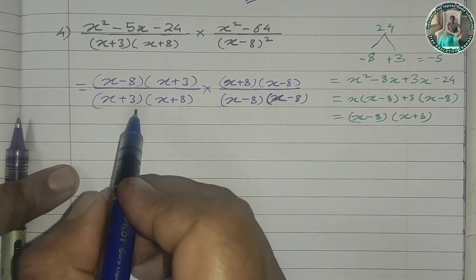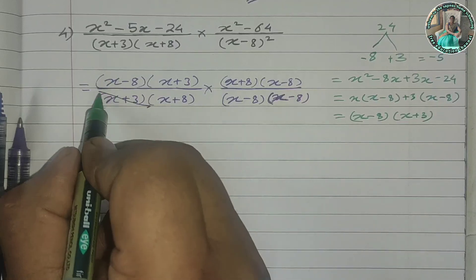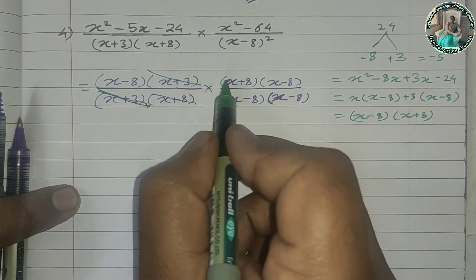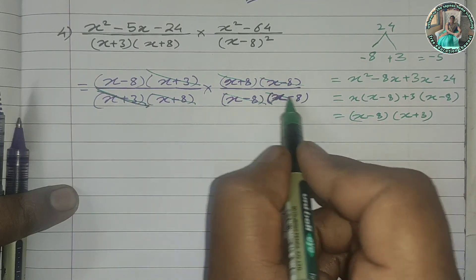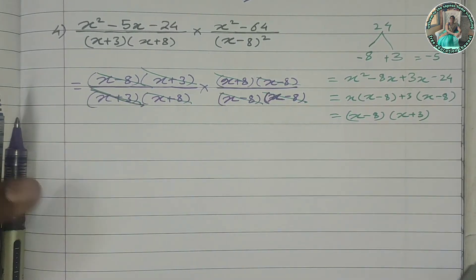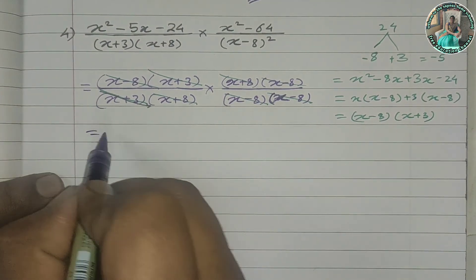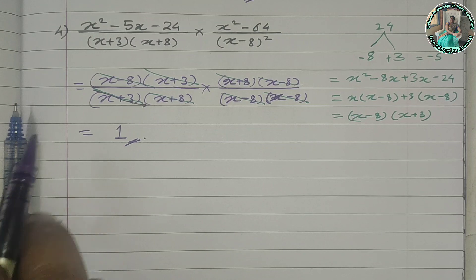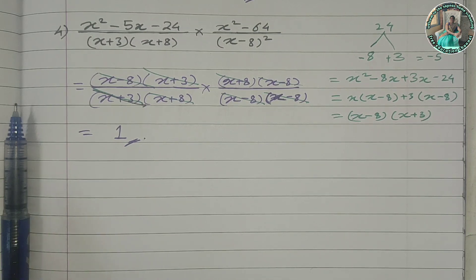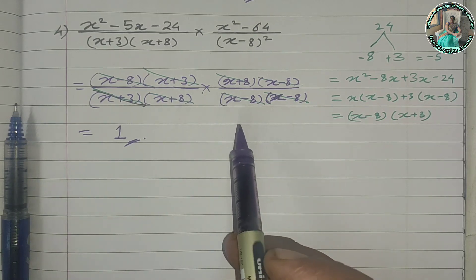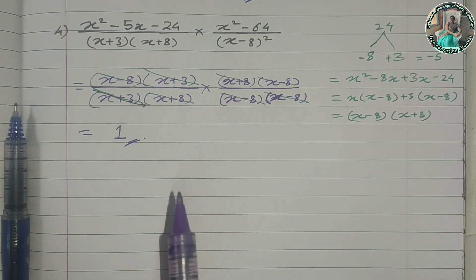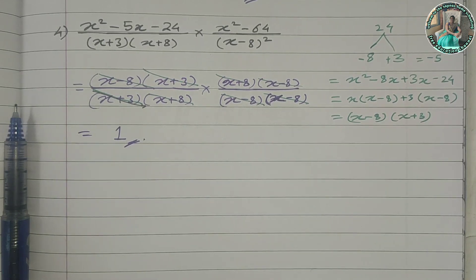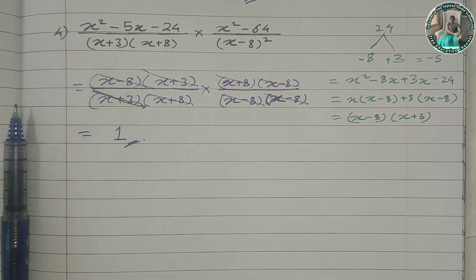After canceling (x + 3), (x + 8), and (x − 8) terms, the remaining answer is 1. That completes question 4. We will solve questions 5, 6, 7, and 8 in the next video. If you have any problems, please subscribe to the channel and click the bell icon.